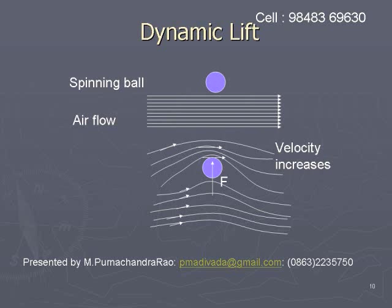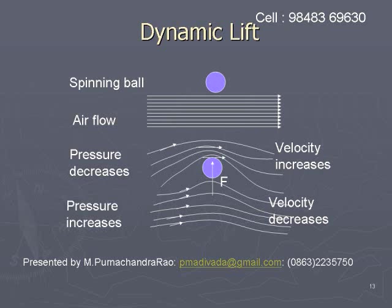The spinning ball surface experiences two velocities. When the air is flowing and the ball is spinning, the ball imparts velocity to the air layers flowing on its surface. The air layers flowing over the surface of the ball experience two velocities: one, their own velocity, and the other, the velocity due to the spinning ball. So the velocity of the air layers in contact with the surface of the ball will be modified.